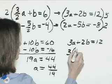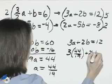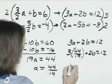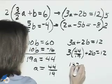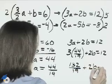3 times 44 19ths plus 2b equals 12. Here we'll have 3 times 44 is 132 19ths plus 2b equals 12.